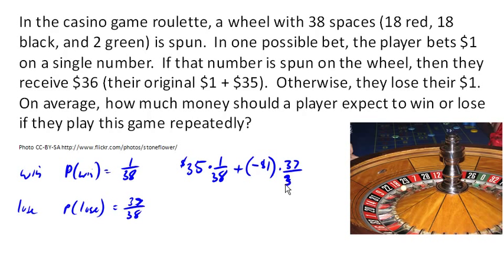If we add those together, we end up with 35 over 38 minus 37 over 38 is negative 2 over 38, or in other words, about negative 0.053. So in other words, if you were to play this game, you should expect, on average, to lose about 5 cents per spin.